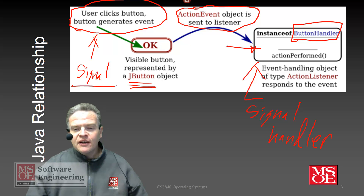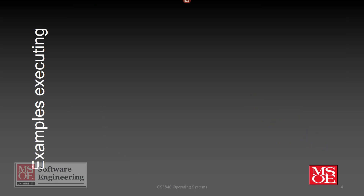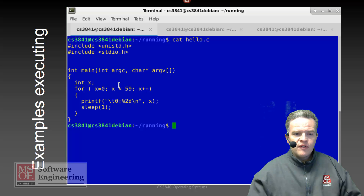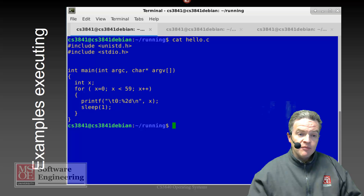Let's take a look at an example of a signal handler at work. Typically the first place we see signals used is in keyboard actions. Here we see a very simplistic piece of code that will loop between 0 and 59, printing out the time once per second and sleeping one second in between.